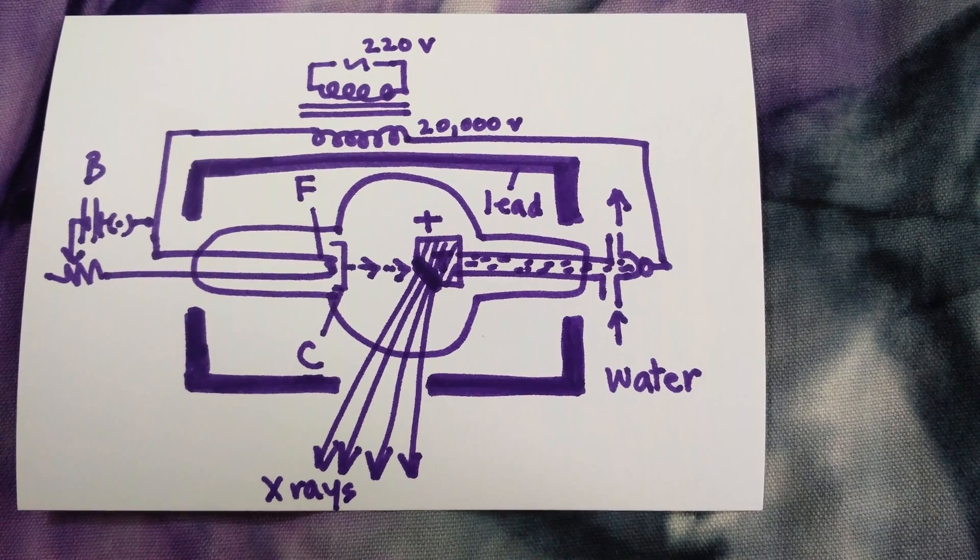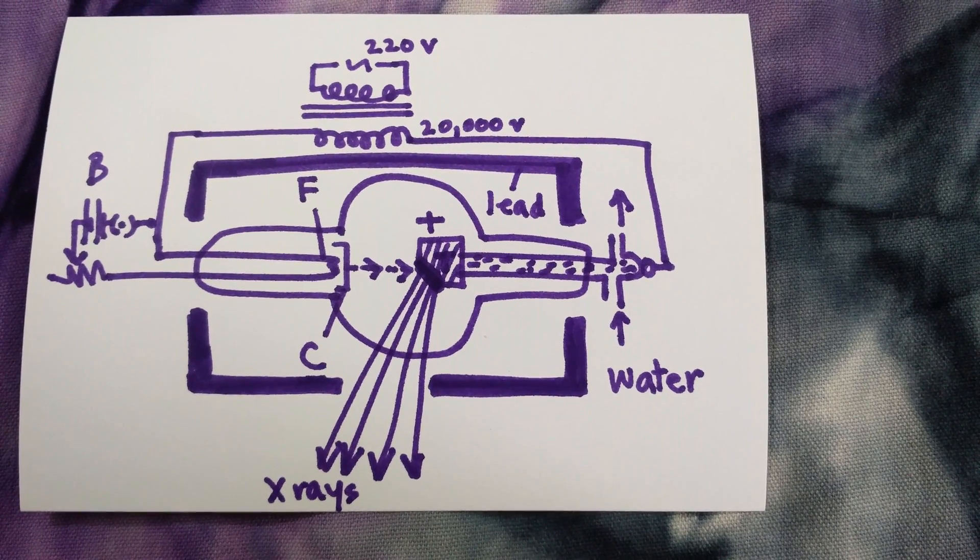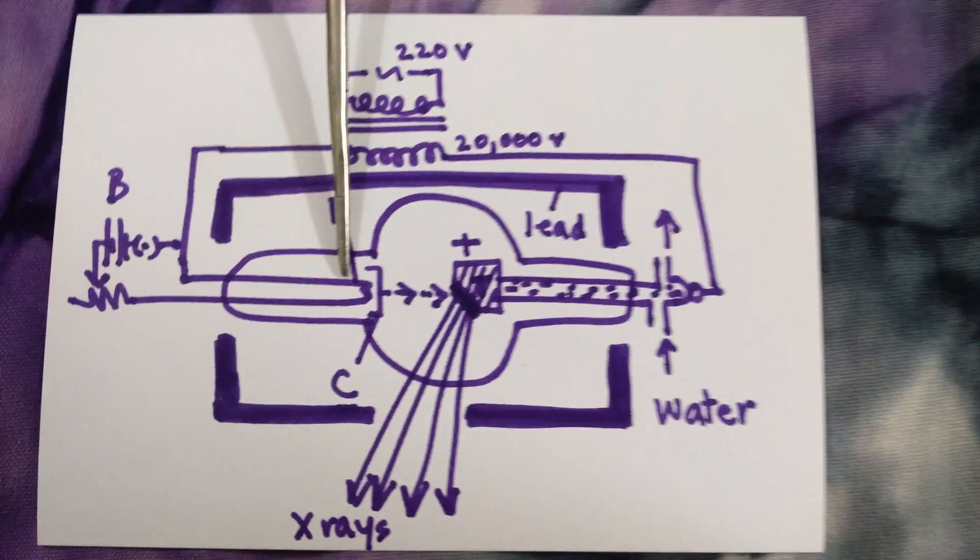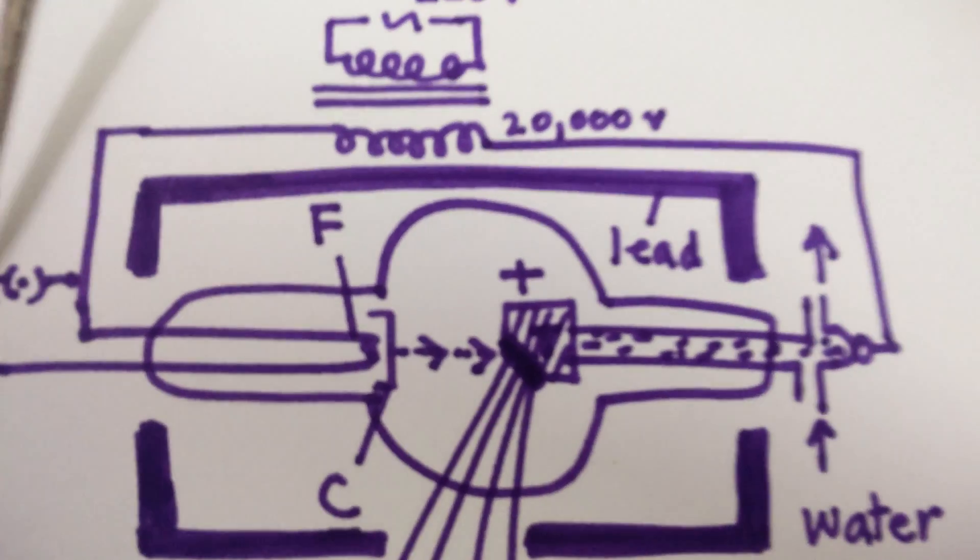The following is a diagram of a Coolidge tube that is used to produce x-rays. The tube has a tungsten filament F through which current is passed by means of a battery B.